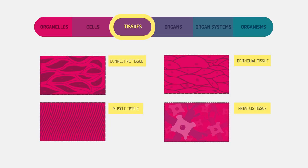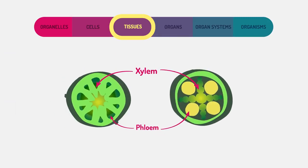Groups of cells then form together to form tissues. In humans, we have four main types of tissue. In plants, the xylem and phloem are examples of plant tissues.